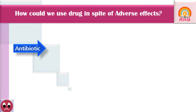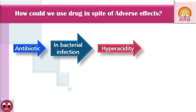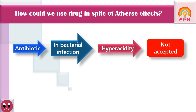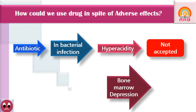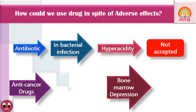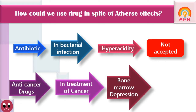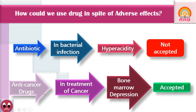For example, if we are using an antibiotic for a bacterial infection and hyperacidity appears as an adverse effect, it is not accepted because the amplitude of hyperacidity is more compared to the benefit of curing a common infection, so we replace it with another antibiotic. On the other hand, bone marrow depression is accepted in anti-cancer drugs because the anti-cancer effect is greater in amplitude than the bone marrow depression.